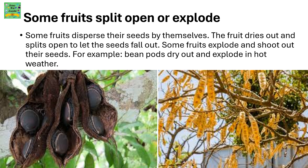There are some fruits that split open or explode. Some fruits disperse their seeds by themselves. The fruit dries out and splits open to let the seeds fall out. Some fruits explode and shoot out their seeds. For example, bean pods dry out and explode in hot weather.